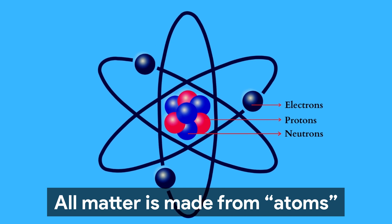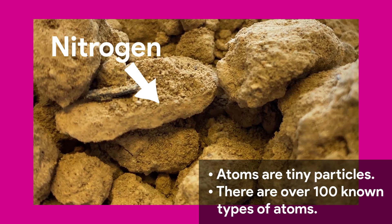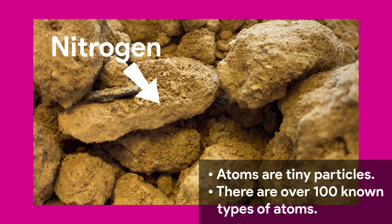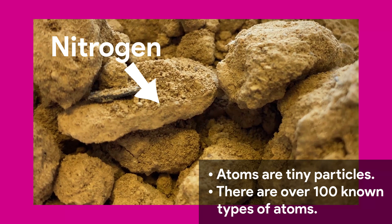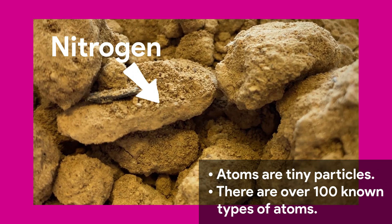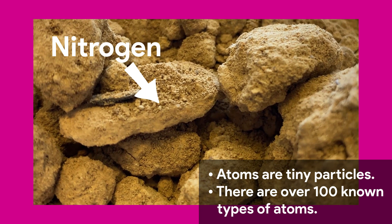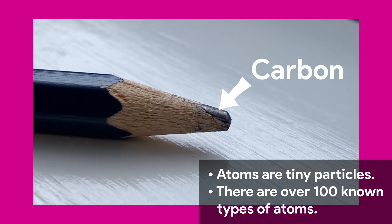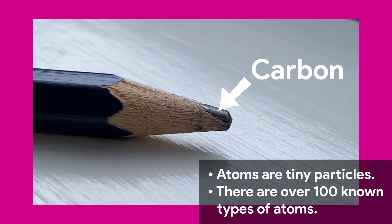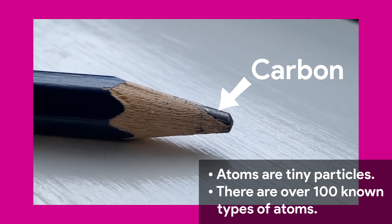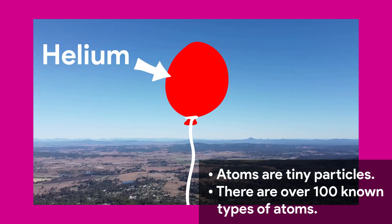Atoms are the tiniest whole particles known to science. So tiny, we can only see them in clusters. There are over a hundred types of atoms, which we call elements. Each one of these elements is slightly different.